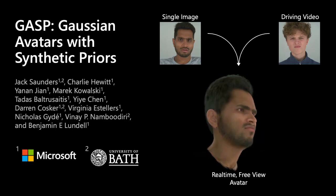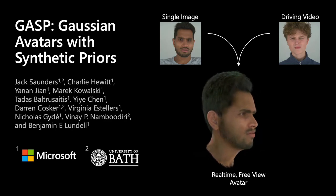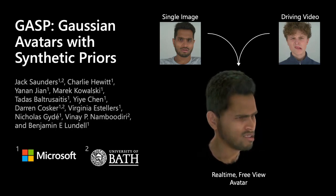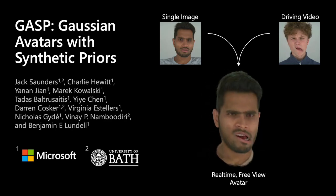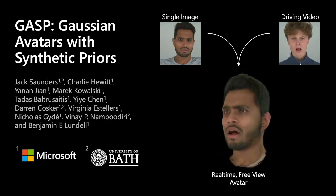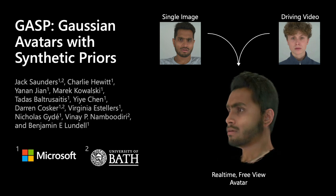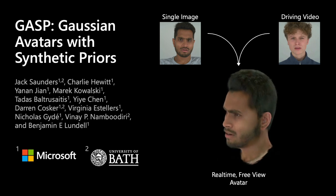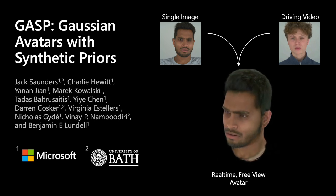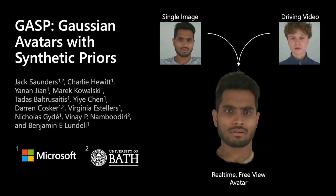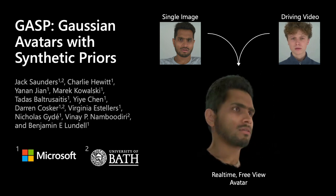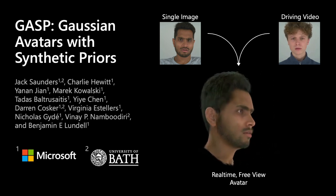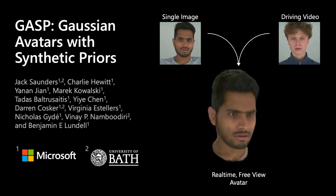We present GASP, Gaussian avatars with synthetic priors. GASP is a novel method for creating highly realistic, real-time, animatable avatars with full 360-degree rendering capabilities using easily obtained data.